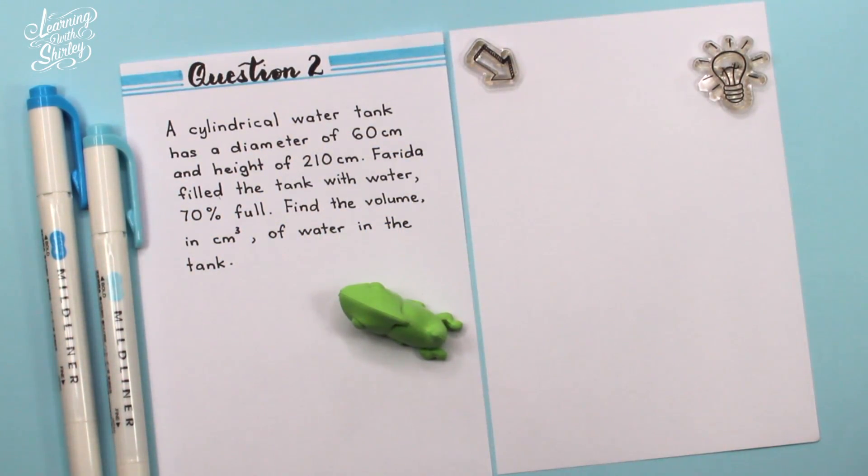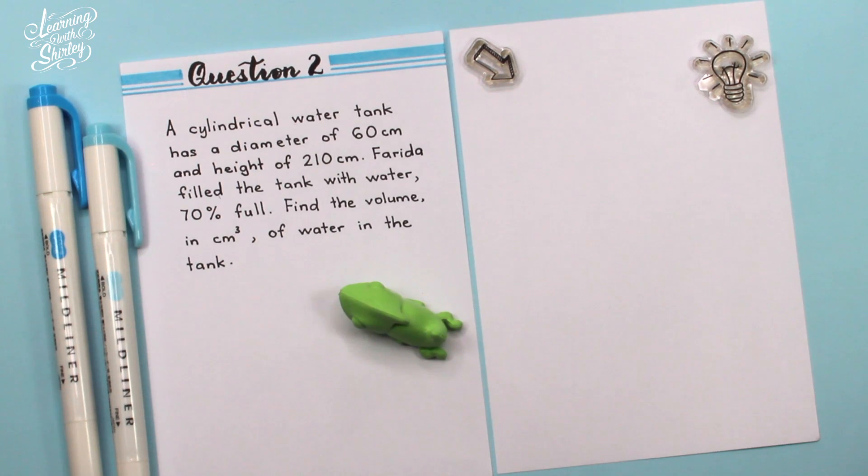For question number 2, a cylindrical water tank has a diameter of 60 cm and height of 210 cm. Faridah filled the tank with water 70% full. Find the volume in cm cube of water in the tank.